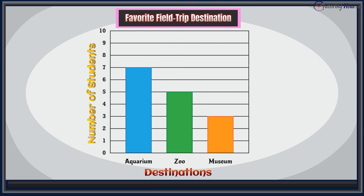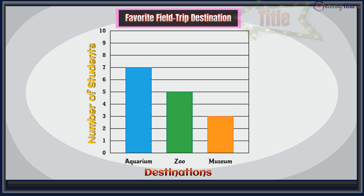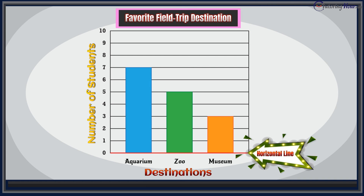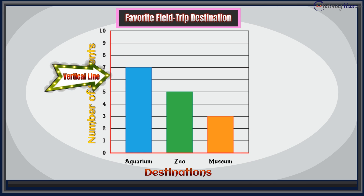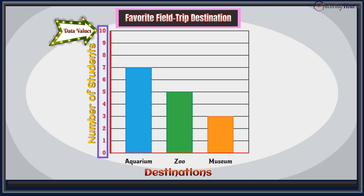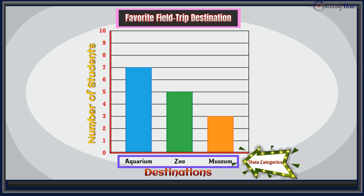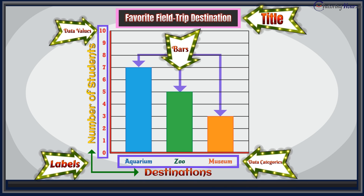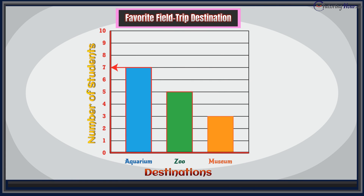Let's read the bar graph and answer a few questions. The title of our bar graph is "Favorite Field Trip Destination." We have a horizontal line and a vertical line. Along the vertical line, we have the number of students, and along the horizontal line, we have the three destination choices. The bar graph makes it easy for Ms. Jenkins to compare the children's responses and decide where to take them.